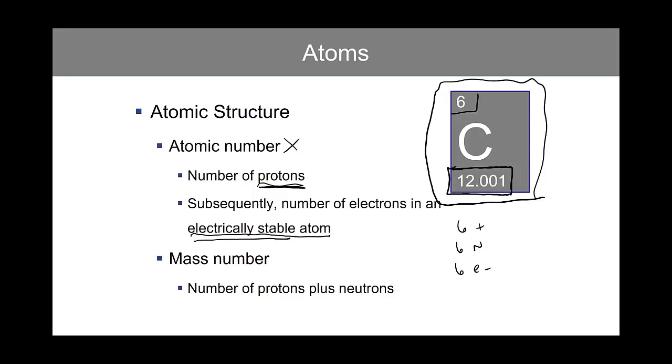For this example, the mass number is 12.001, and that would account for the number of protons and the number of neutrons.